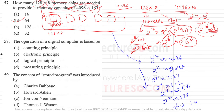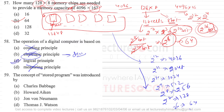Question 58: The operation of a digital computer is based on what? Digital computers work on the principle of logic — you apply logic to perform operations. Counting principle is not correct; electronic principle is not correct (electronic devices exist, but not electronic principles); missing principle is not correct. Computers are based on logical principles.